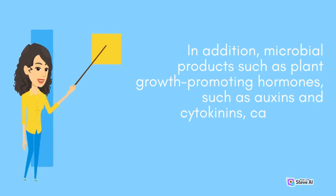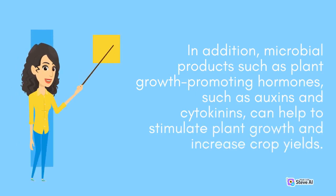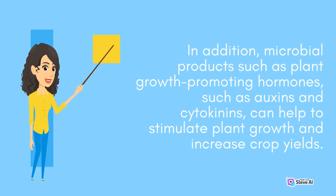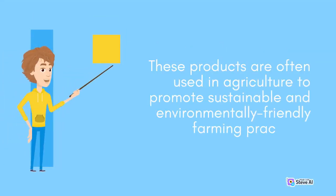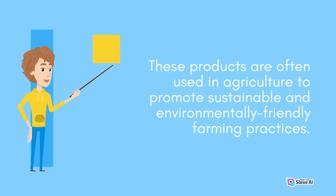In addition, microbial products such as plant growth-promoting hormones, such as auxins and cytokinins, can help to stimulate plant growth and increase crop yields. These products are often used in agriculture to promote sustainable and environmentally-friendly farming practices.